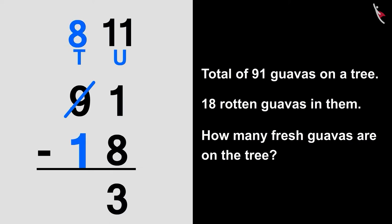Now, 8 minus 1 is 7. We will write it here below the tens part like this. 91 minus 18 is equal to 73.